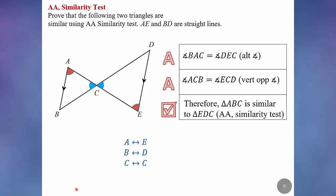Therefore, triangle ABC is similar to triangle EDC because of AA similarity test. Remember to write this conclusion.